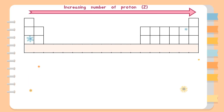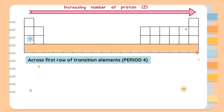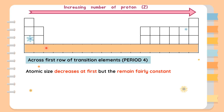Lastly, the atomic radius across the first row of transition elements located in period 4 of the periodic table shows a trend fairly similar to across a period, where atomic radius consistently decreases. However, for the first row of transition elements, the atomic size shows a noticeable decrease across the first 5 elements, but then starts to remain fairly constant for the rest.